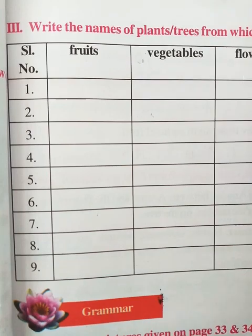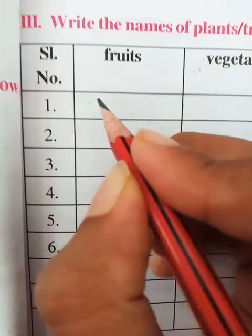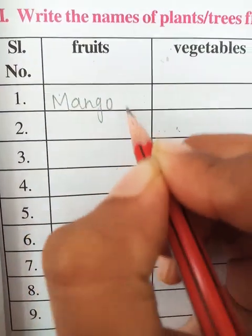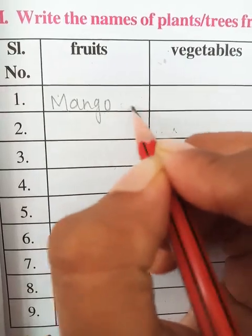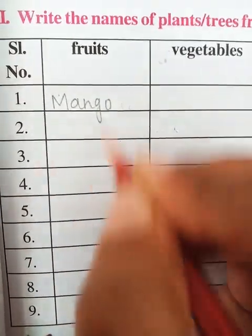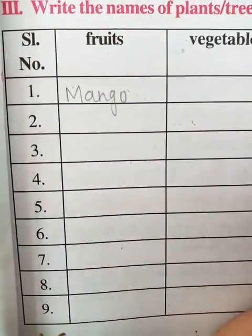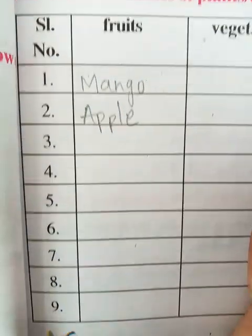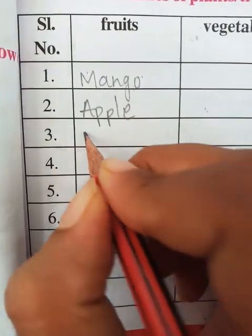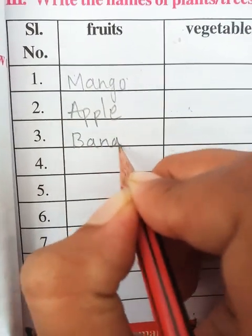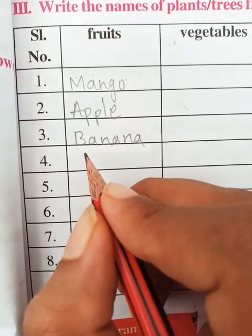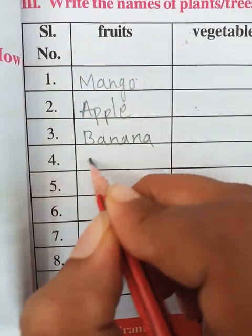From which you get fruits - you already know: mango, we get mango from a mango tree. Write the names of the fruits: mango, then apple (A-P-P-L-E), then banana, then orange.